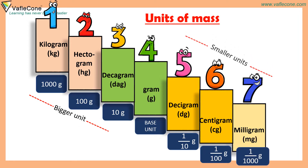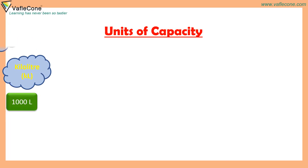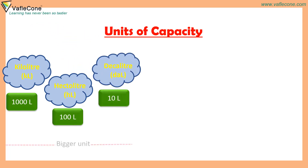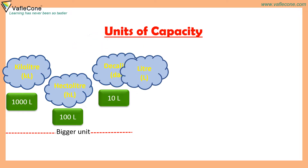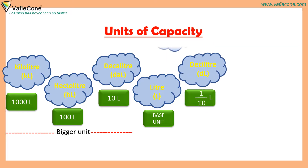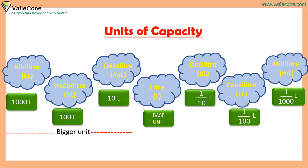These are smaller units. Units of capacity. 1 kilolitre is equal to 1000 litres, 1 hectolitre is equal to 100 litres, 1 decalitre is equal to 10 litres. These are bigger units. Liter is the base unit. 1 decilitre is equal to 1 tenth of a litre, 1 centilitre is equal to 1 hundredth of a litre, 1 millilitre is equal to 1 thousandth of a litre.